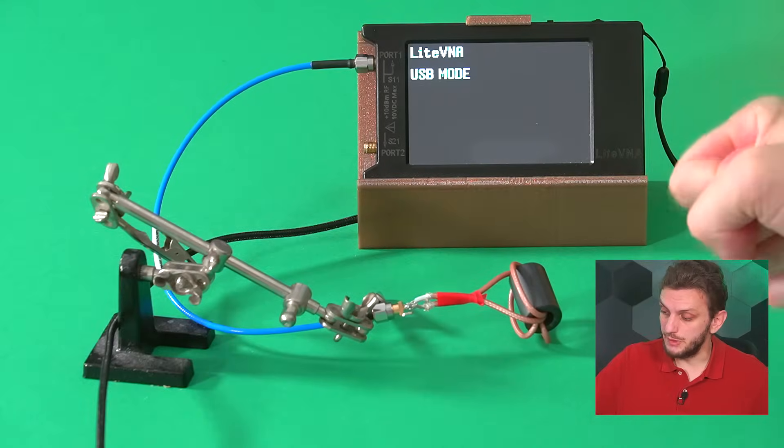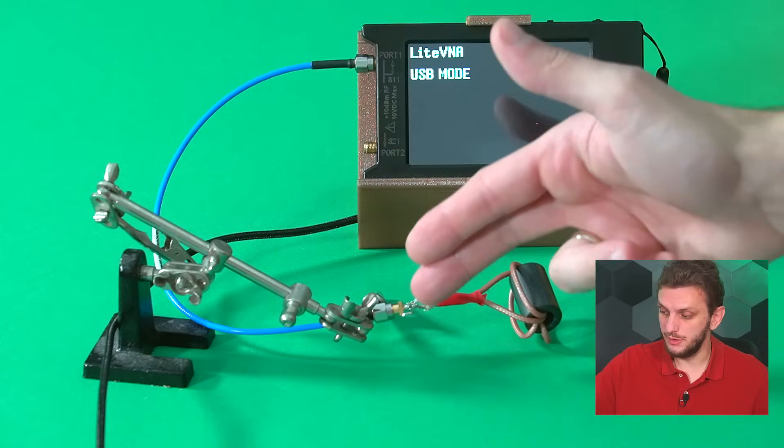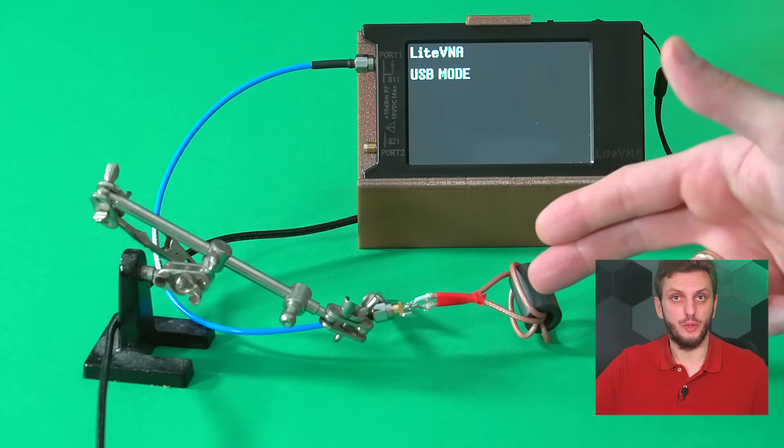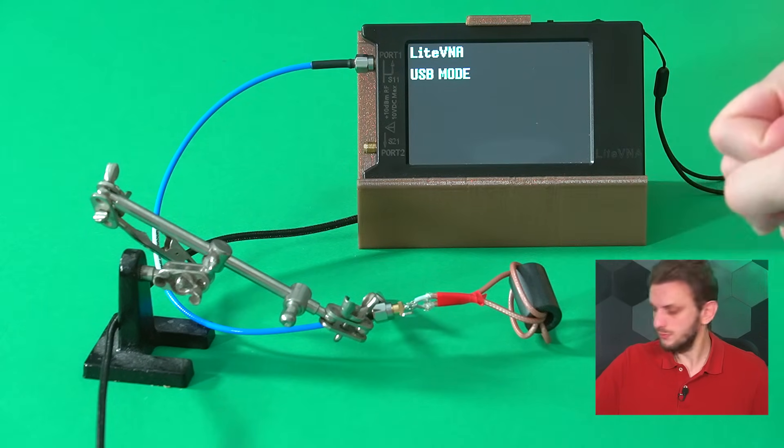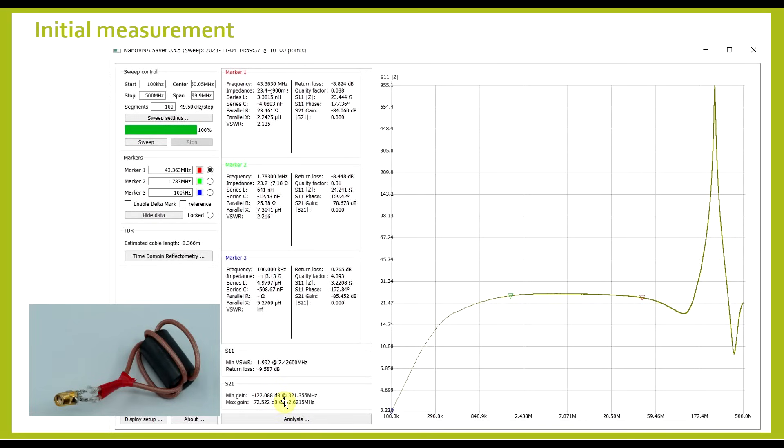What I have here is an implementation of such a transformer, that on the one side is connected to the VNA and on the other to a 100 ohm load resistor. This is built from around 40 centimeters of 50 ohm coax cable, wound onto a ferrite core. And if everything works as expected, this transformer should perform the 1 to 4 impedance transformation, therefore taking the 100 ohm load resistance and turning it into 25 ohms on the VNA side.